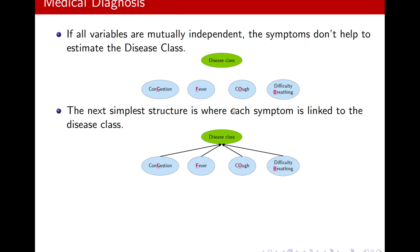So we want to somehow use these ones, and perhaps one of the next simplest structures is when, something like this, is when all the symptoms are linked to the disease class. Now, there's an issue with this structure, and that is that the disease class, if we focus on it, the corresponding CPD, it can be huge.